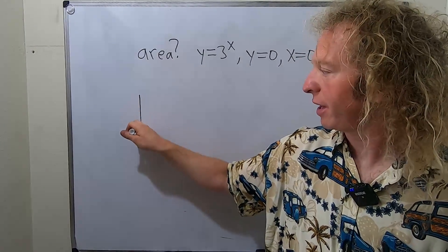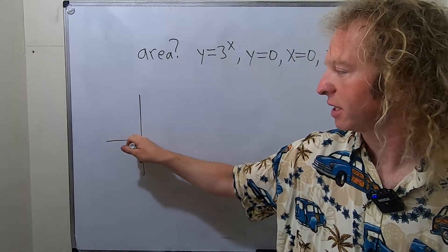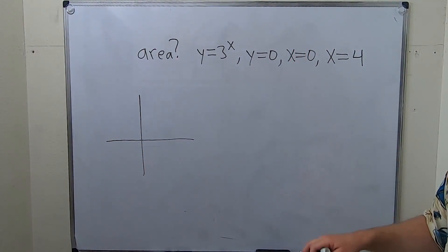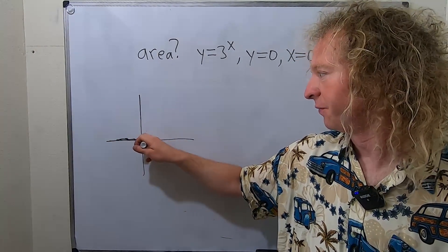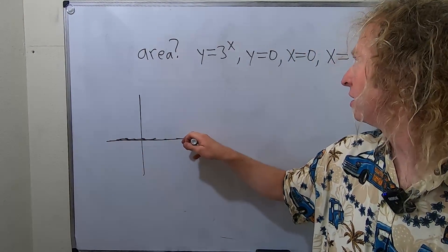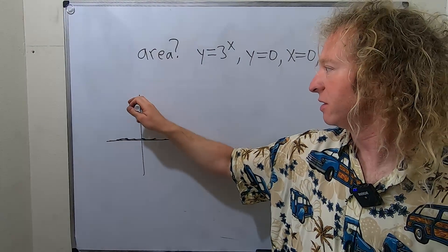So here is the y-axis, and here is the x-axis. y equals 0 is a horizontal line, so that's this line here. And then x equals 0 is a vertical line, so that's this line here.